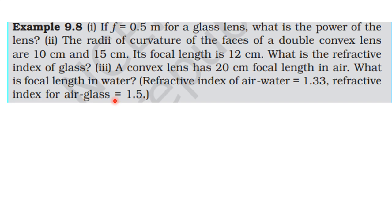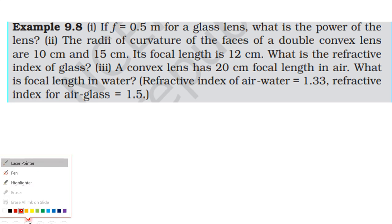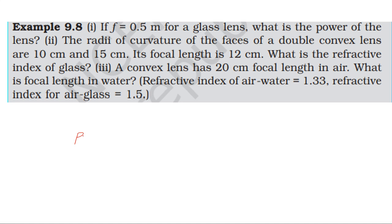For the first problem, the focal length is 0.5 meter and we need to find the power. Power is equal to 1 divided by focal length — that is, power is the reciprocal of focal length. Focal length is 0.5, so power equals 1 divided by 0.5.